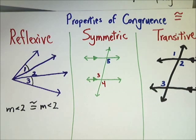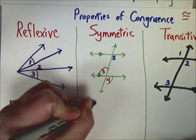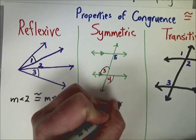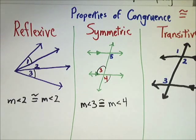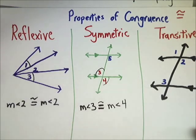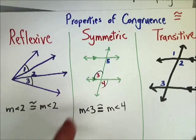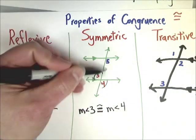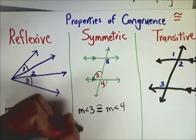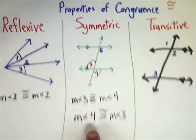Symmetric means I can flip the order if I need to. With vertical angles, I know the measurement of angle 3 is congruent to the measurement of angle 4. If I needed to make a statement about angle 4 and 5 as corresponding angles, but I need to talk about angle 3, it's okay to flip this around. That's the symmetric property of congruence.